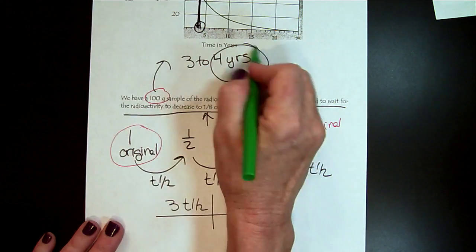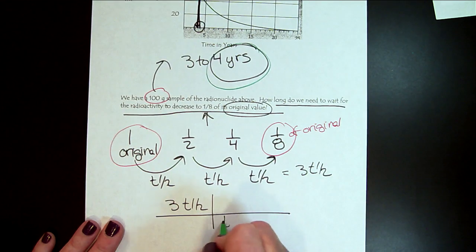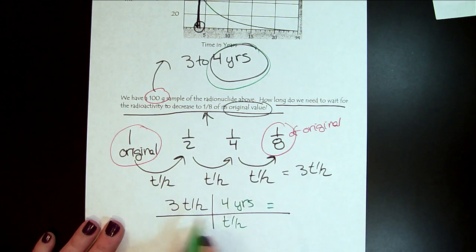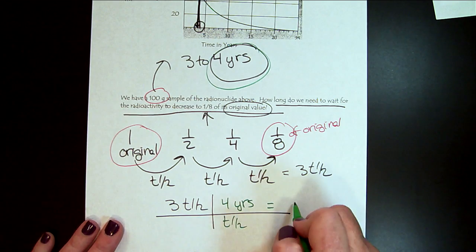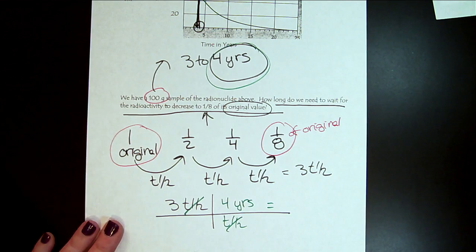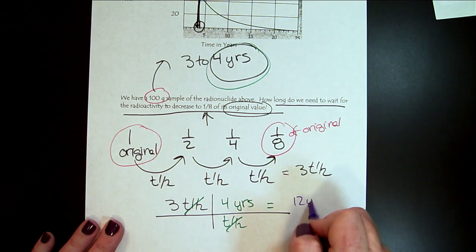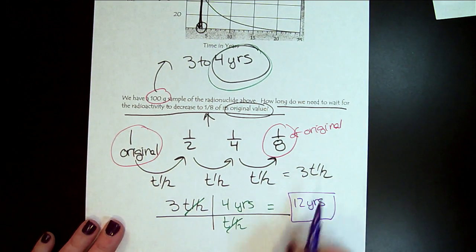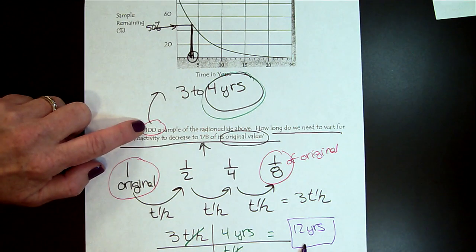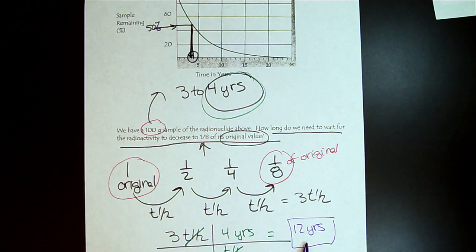And from our chart up here, we said that each half-life is four years. Only one sig fig. So it would take, so now the half-lives are going to cancel. So it would take 12 years for this sample to decay from its original amount to one-eighth of its original amount.